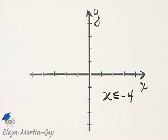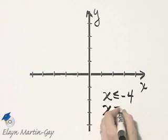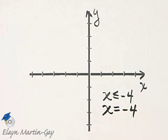Let's graph this linear inequality, x is less than or equal to negative 4. Remember how you graph an inequality? You first look at the corresponding equation to find the boundary line.